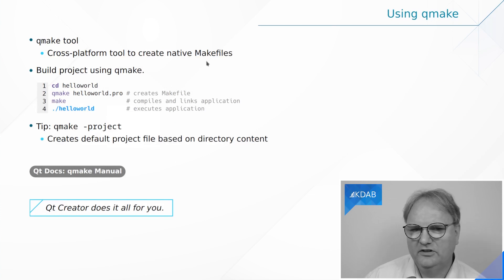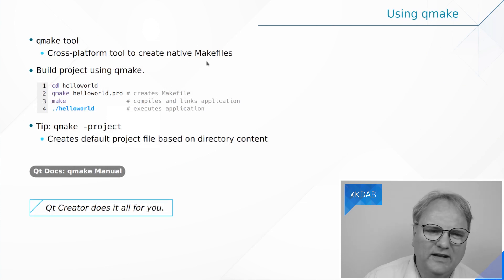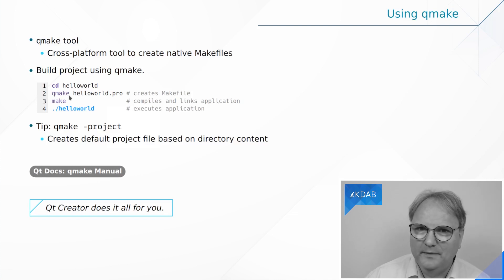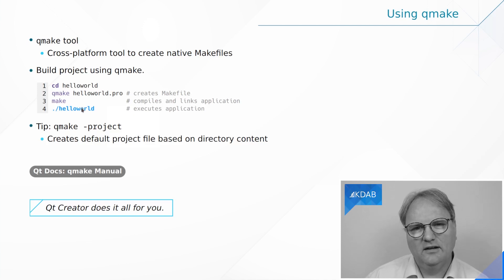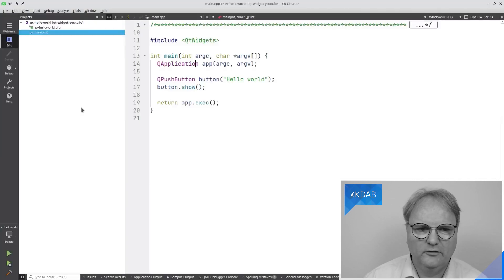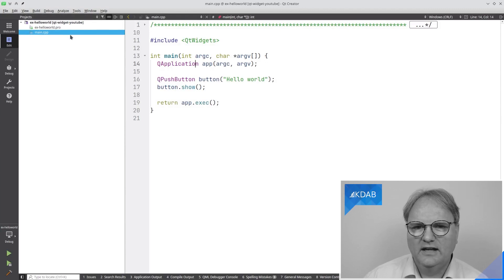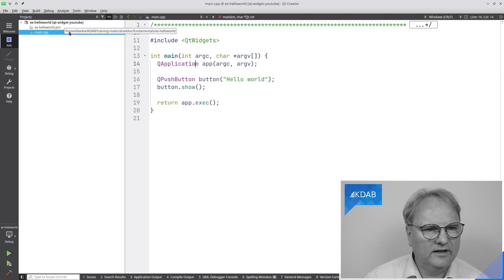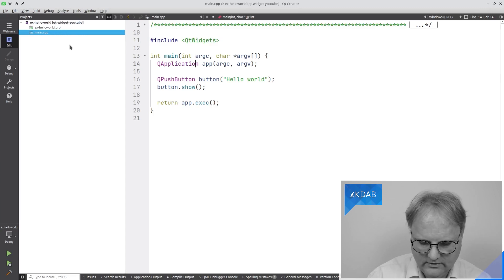QMake will generate a native Makefile in whatever format. The way you run it is: run QMake on your .pro file, run your build system, and then run your application. Of course, in real life you go to your IDE where things are already set up. Whenever you load in a file from this training, you will find that there is a .pro file. Let's actually try and load one in — Control-O for Open.